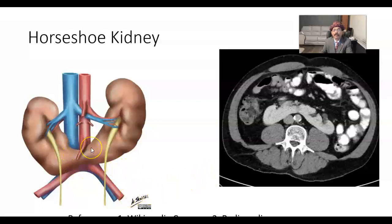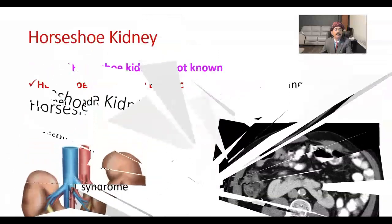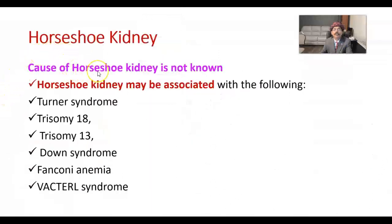This image has been taken from radiopedia.org. Another CT scan has been taken from Wikimedia Commons, showing the horseshoe kidney. The cause of horseshoe kidney is not known. It may be multifactorial — possibly environmental, or due to exposure of the fetus to some type of teratogenic agent like drugs or alcohol. But the exact cause is not known.